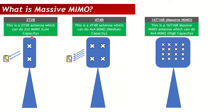First, let's understand what normal MIMO is. With older antennas like those used in LTE, we had 2T2R — two transmitters and two receivers. So this antenna has one TX and one RX, and a second TX and second RX, making it a 2T2R antenna. With 2T2R you can use 2×2 MIMO, meaning two layers. If a single layer gives 75 Mbps, two layers gives 150 Mbps.